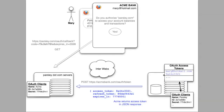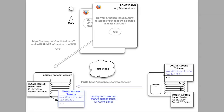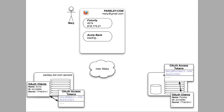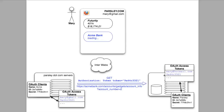Acme returns the newly created access token with expiration date to Parsley in the form of JSON. Parsley now has Mary's access token granting them the privilege of accessing Mary's account balances over at Acme. Parsley passes the success along back to the browser, and the Parsley dashboard now knows a token exists for Mary and makes another request to populate the gadget. Parsley simply passes along the token as an HTTP authorization header, Acme recognizes the token is valid and returns the data, and Parsley can then correctly render Mary's dashboard.